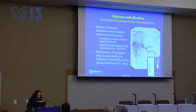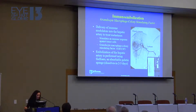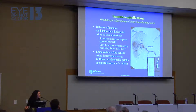Immunoembolization is the delivery of immune modulators into the hepatic artery to treat metastases. We're trying to boost the patient's immune system to fight tumor cells using granulocyte macrophage colony stimulating factor, or GM-CSF. In addition to delivering GM-CSF into the hepatic artery, we also block the blood supply to the liver and the tumors. We typically choose a temporary agent, temporarily embolizing the hepatic artery, with blood flow restored within two to five days.